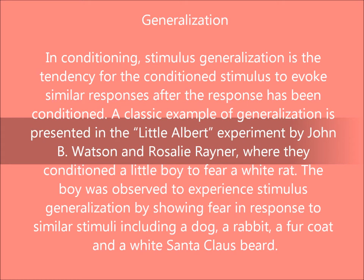A classic example of generalisation is presented in the Little Albert experiment by John B. Watson and Rosalie Rayner, where they conditioned a little boy to fear a white rat. The boy was observed to experience stimulus generalisation by showing fear in response to similar stimuli including a dog, a rabbit, a fur coat, and a white Santa Claus beard.